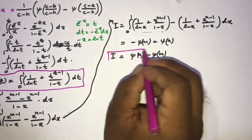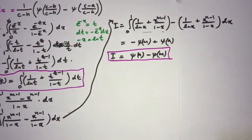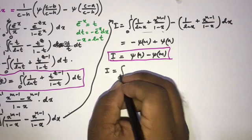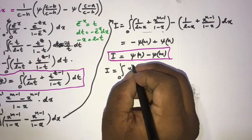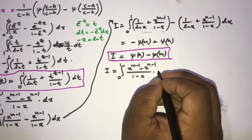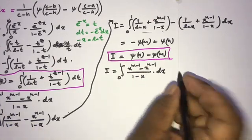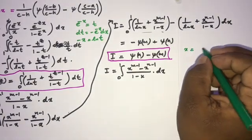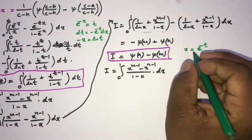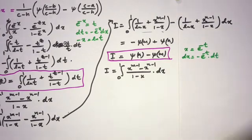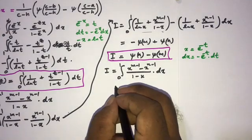So we have the result I = ψ(n) - ψ(m). This is another interesting formula. Now I'm going to take our integral I again and apply the substitution x = e^(-t). Differentiating gives dx = -e^(-t) dt.